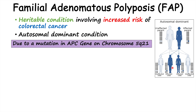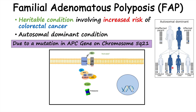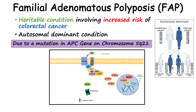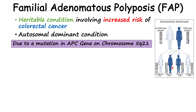This condition is due to a mutation in the APC gene on chromosome 5q21. For more information on how this APC protein is affected, please check out my full lesson on the WNT beta-catenin pathway. Briefly, when the APC protein is affected, it is not able to break down beta-catenin, leading to increased levels of beta-catenin and eventual increased growth and proliferation of cells. This is the reason why we see an increased risk of colorectal cancer and other cancers in familial adenomatous polyposis.